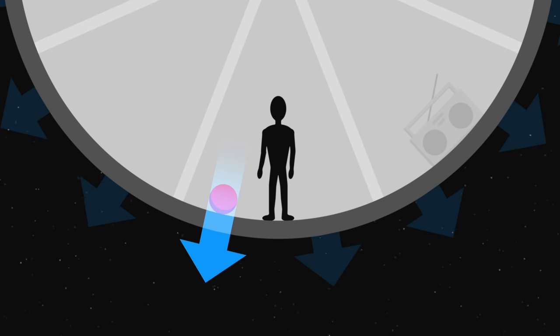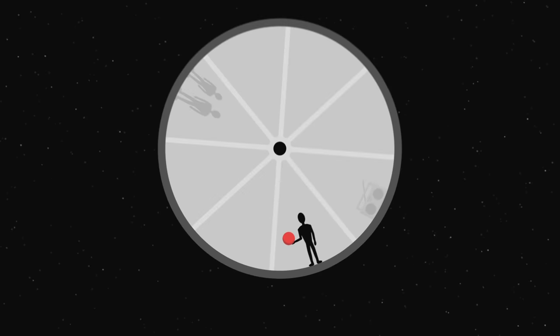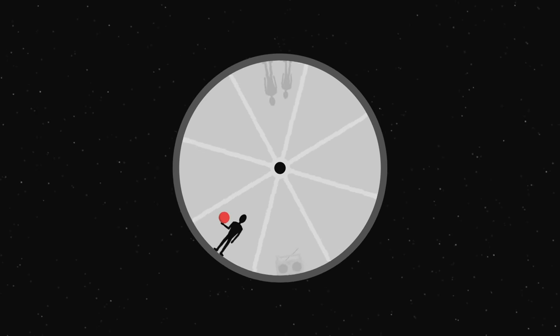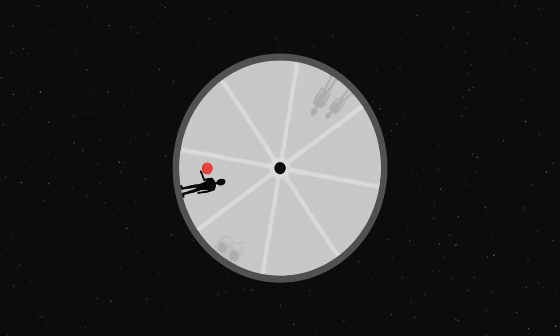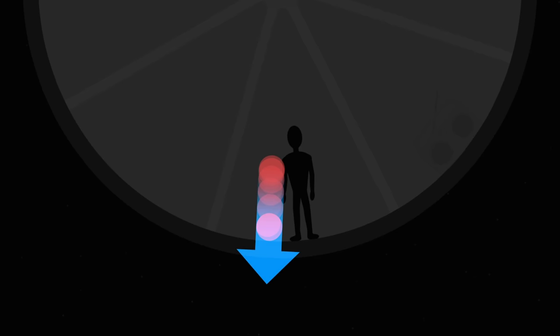It is important to understand that the centrifugal force is not really a physical force. When observed from the outside, we understand that the ball has not undergone anything. Once released, it is no longer in contact with the astronaut and it therefore moves straight ahead. But by observing the ball while spinning, the astronaut has the impression that there is an additional fictitious force, the centrifugal force, which he invents to explain the motion of the ball in his frame of reference.